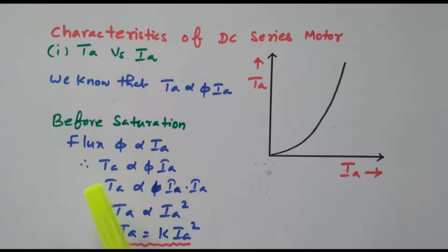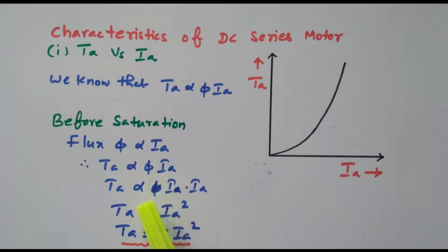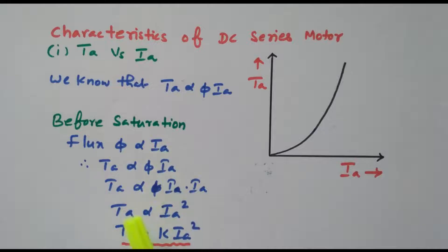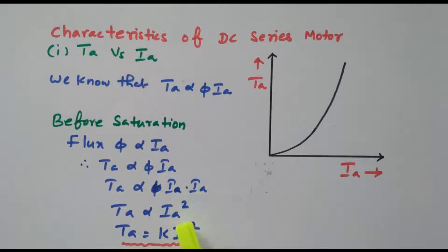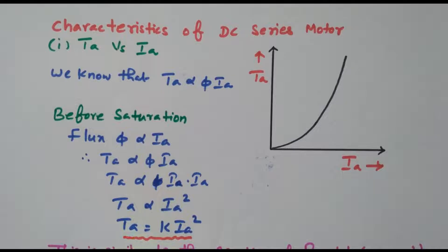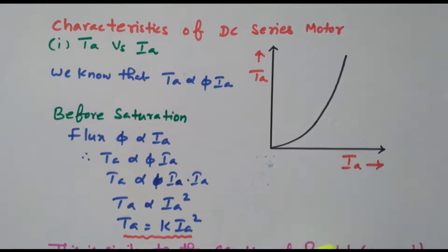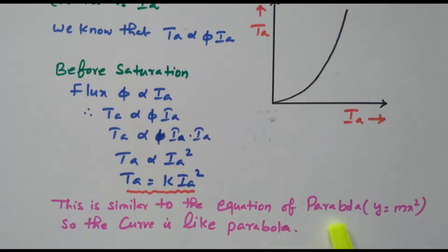First we will see the before-saturation case. φ is directly proportional to I_A because in a series motor the field coil, armature, and load are all connected in series, so the same current flows through the field winding. Therefore T_A equals φ into I_A, and replacing φ with I_A gives T_A proportional to I_A squared. So torque is directly proportional to the square of armature current. This is similar to the equation of a parabola, Y = MX².